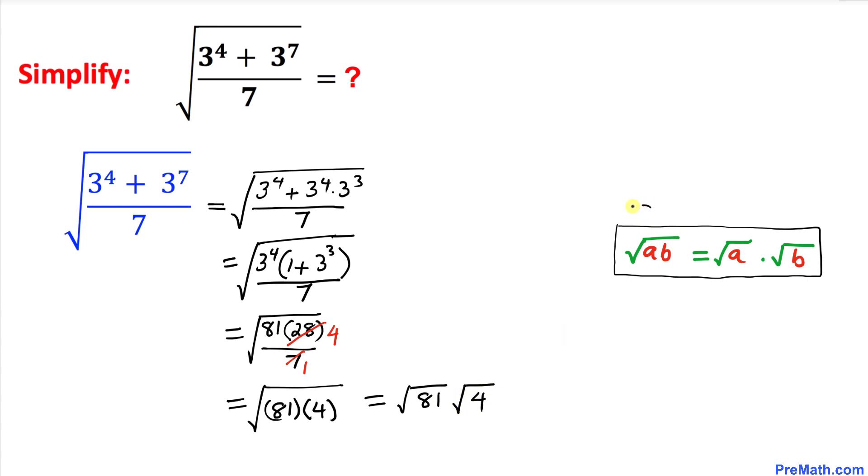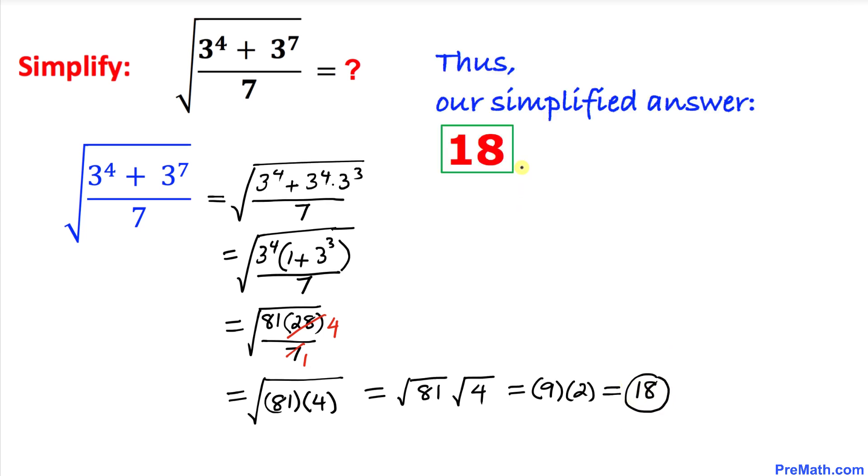Now we know that the square root of 81 is simply 9 and the square root of 4 is 2. Now let's go ahead and multiply them. 9 times 2 is 18 and that's our simplified answer. So thus our simplified answer turns out to be 18.